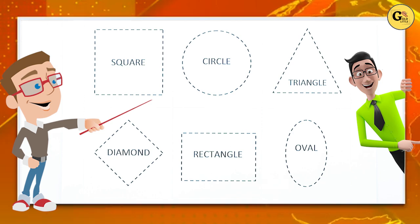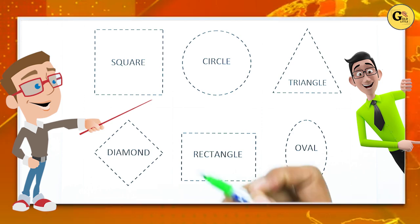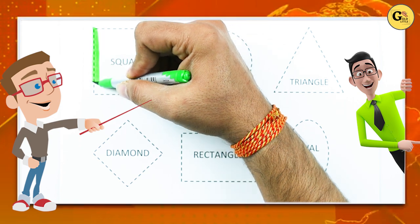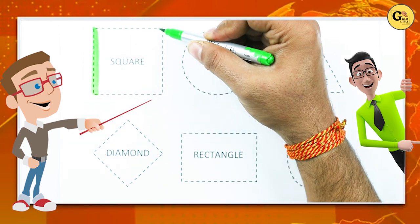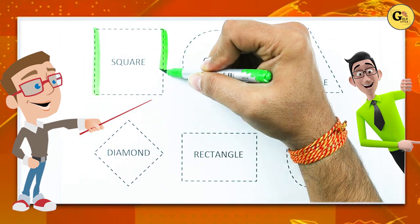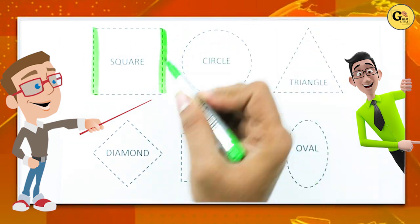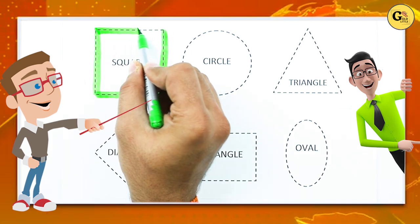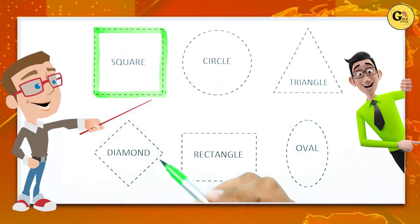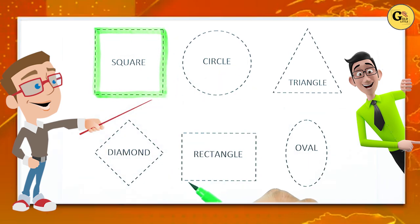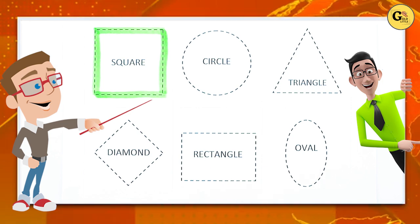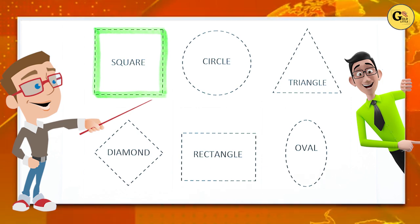Let's start. It's square. One line, two line, three line, four line. Two slipping line, two standing line. It's called square with green color.